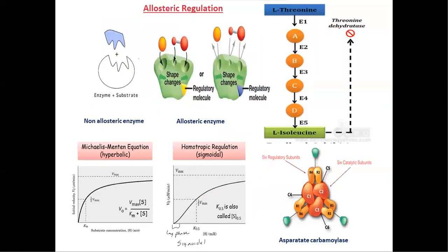The first important method of enzyme regulation is allosteric regulation. In this regulation, we need to learn about the difference between non-allosteric enzymes and allosteric enzymes. Non-allosteric enzymes do not have allosteric sites; they have only a catalytic site where the substrate molecule will be attached. Allosteric enzymes, on the other hand, have allosteric sites as well as catalytic sites.